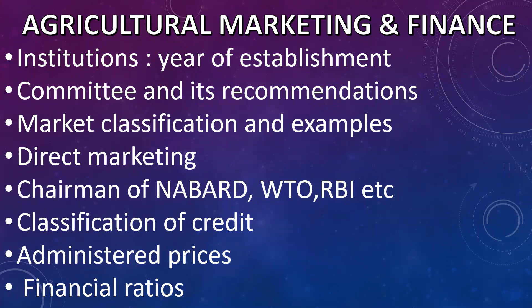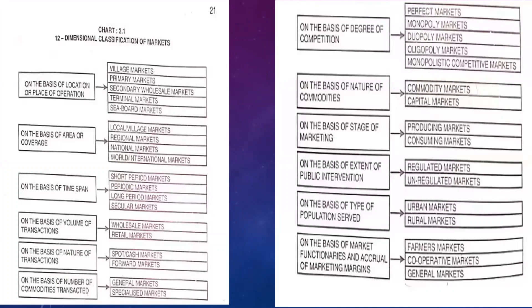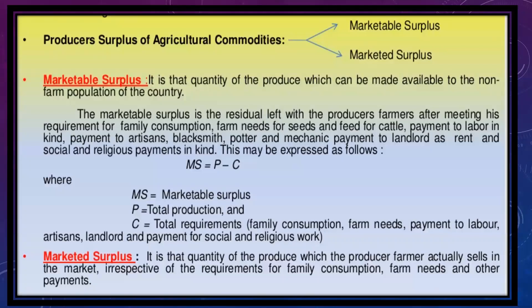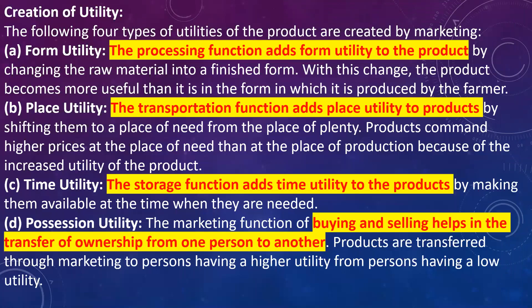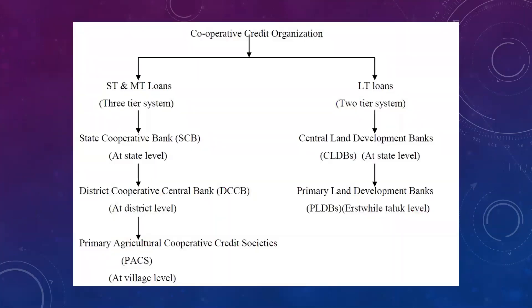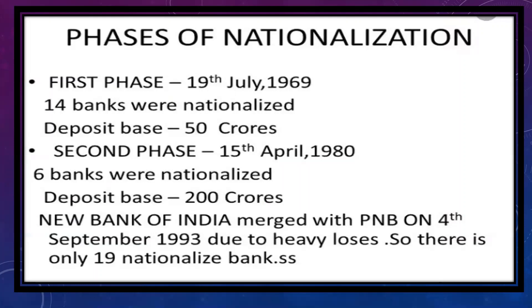These are important points from agriculture marketing and finance for last-minute revision. I've given a chart of market classification based on different criteria — have a look. Then, marketable surplus and marketed surplus — remember the definitions of both. Marketing creates utility — remember four types: form, place, time, and possession — and which marketing functions create which form of utility. Under cooperative credit, remember the three-tier and two-tier structures: for long-term, two-tier is followed; for short and medium term, three-tier is followed; for marketing also, two-tier structure is followed. Then phases of nationalization — remember the two phases, the criteria, and how many banks were nationalized in each phase.